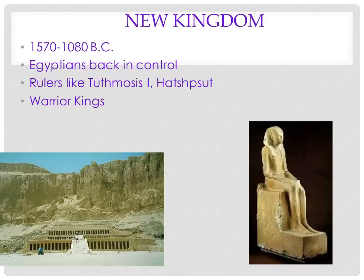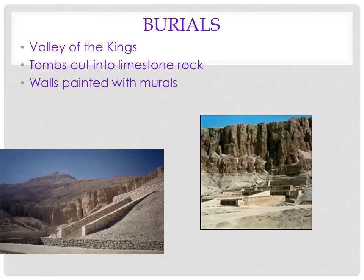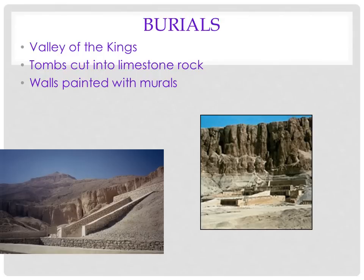Then we come to the New Kingdom, when the Egyptians took back control. This was a real game changer — they stopped building pyramids and everything moved down to Luxor, or Thebes. They started burying the pharaohs in the Valley of the Kings. Here you have the Valley of the Kings with the Temple of Queen Hatshepsut, and here's the famous Temple of Abu Simbel. The tombs were cut into the rock face and the walls were painted with all kinds of murals — it's really awesome when you go there.